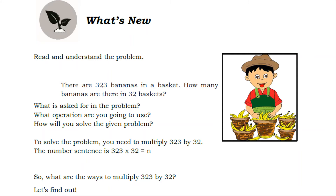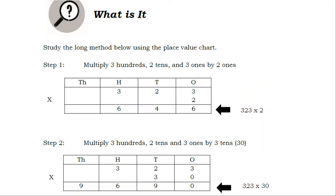What's new? Read and understand the problem: There are 323 bananas in a basket. How many bananas are there in 32 baskets? What is asked in the problem? What operation are you going to use? To solve the problem, you need to multiply 323 by 32. The number sentence is 323 times 32 equals N. What are the ways to multiply 323 by 32? Let's find out.